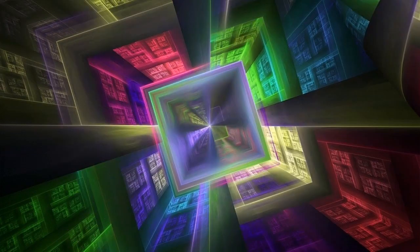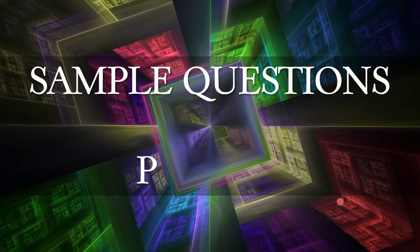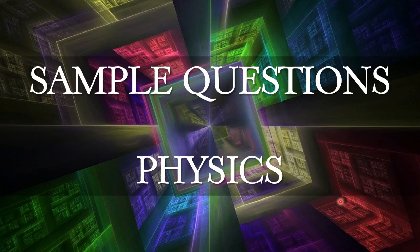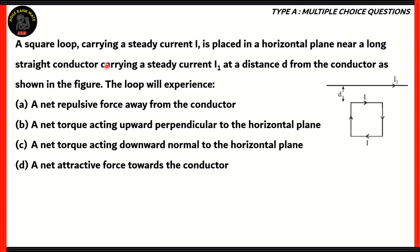Today, we're going to be looking at some questions from physics. Let's start off with the first question. A square loop carrying a steady current I is placed in a horizontal plane near a long straight conductor carrying a steady current I1 at a distance d from the conductor as shown in the figure. The loop will experience: a net repulsive force away from the conductor, net torque acting upward perpendicular to the horizontal plane, net torque acting downward normal to the horizontal plane, or net attractive force towards the conductor.